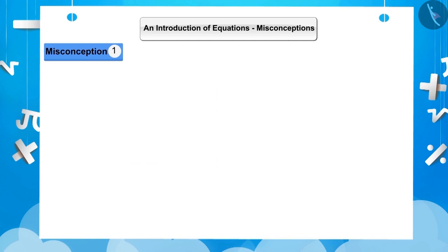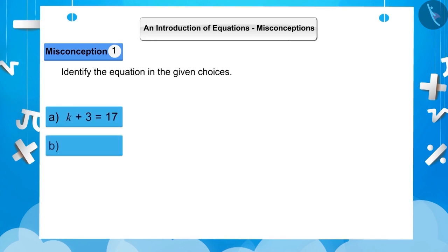Misconception 1. Identify the equation in the given choices. a. k plus 3 is equal to 17. b. k minus 2 less than 3.